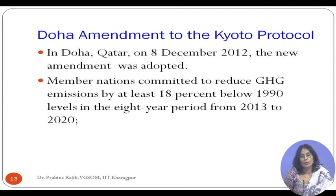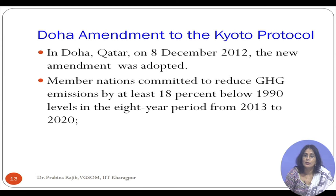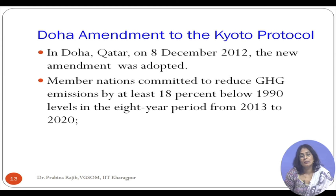Subsequent to the Kyoto Protocol, the UNFCCC met at Doha on 8th December 2012 and a new amendment was made, intended to reduce greenhouse gas emission by 18 percent below the 1990 level during an 8-year period starting from 2013 to 2020.